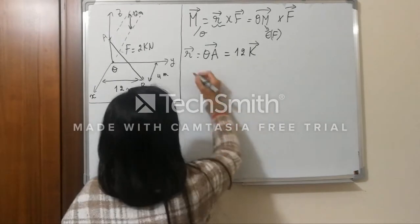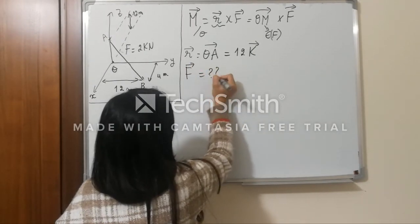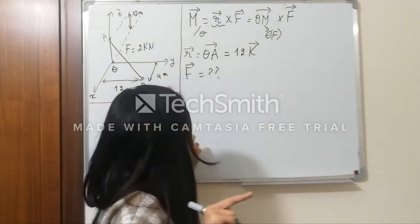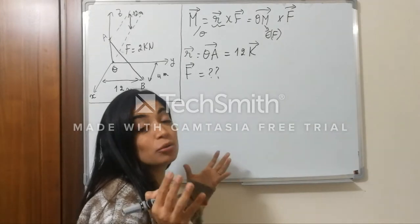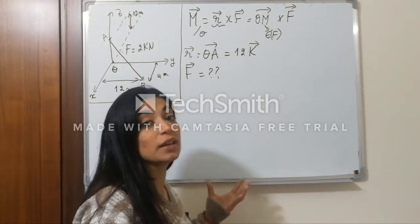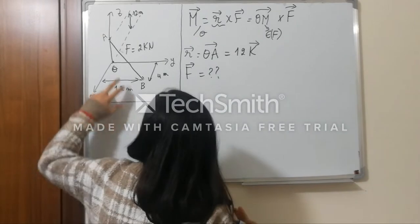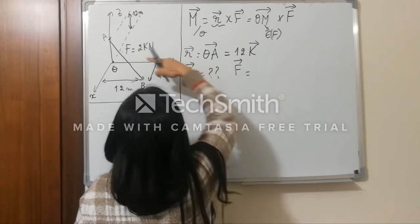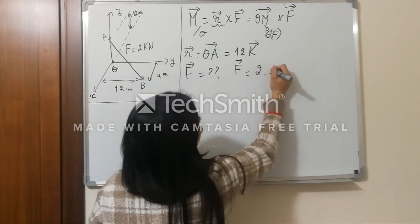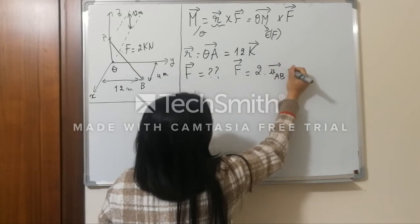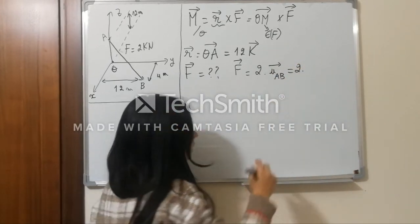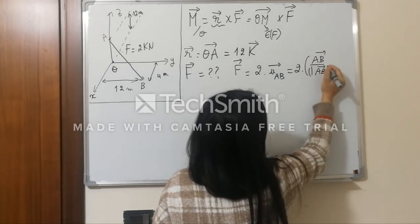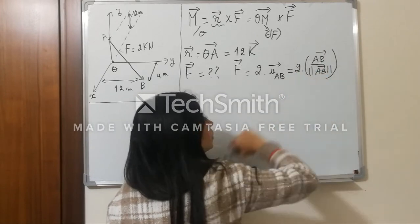Now let's find F in vector form. This is option 3, where F can be found in vector form using the coordinates of points that belong to F, A and B. So F is equal to 2 kN times the unit vector u_AB. u_AB is basically AB over the magnitude of AB — by definition the unit vector of AB. To find AB, I need the coordinates of A and B.